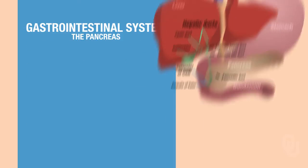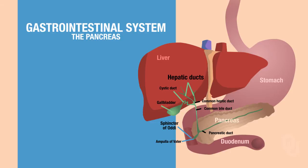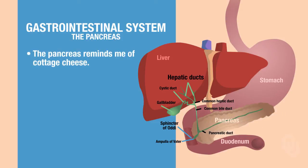Let's take a closer look at how the pancreas fits in with the major organs of the GI tract. If you look here, this is the duodenum, and in the first little curvature portion of the duodenum, you'll find the pancreas. The pancreas reminds me of cottage cheese, so I apologize if you like cottage cheese, but it does.